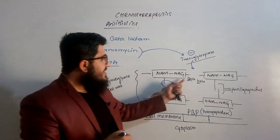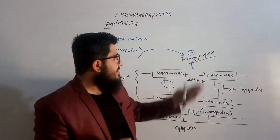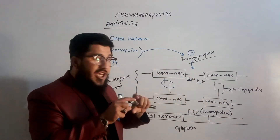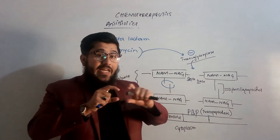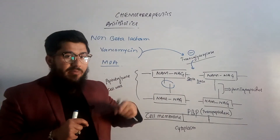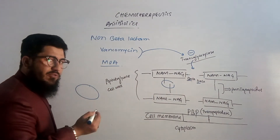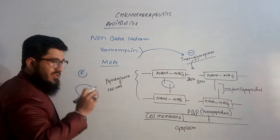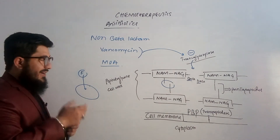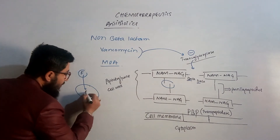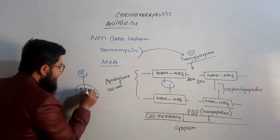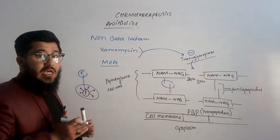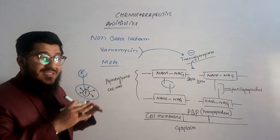What will happen when transglycosylase is inhibited? When the terminal D-Ala-D-Ala residues cannot be linked — because transglycosylase is not available — there will be no linkage between the NAM/NAG units. This results in inhibition of cell wall synthesis. When there is no proper formation of the cell wall, the fluid surrounding the bacterium will start diffusing inside. This fluid exerts osmotic pressure on the cell membrane, and since the cell membrane cannot withstand this osmotic pressure, it causes lysis of the bacterium.